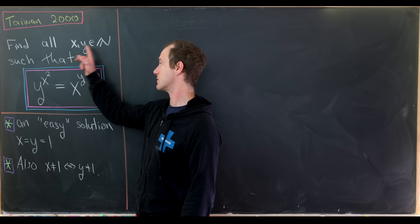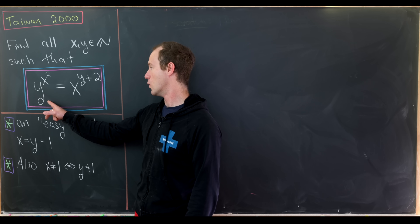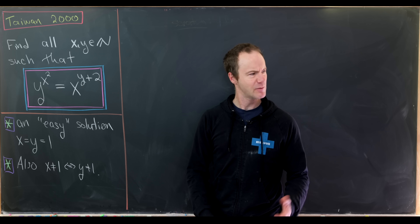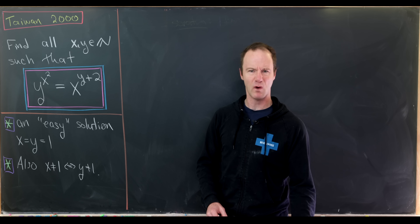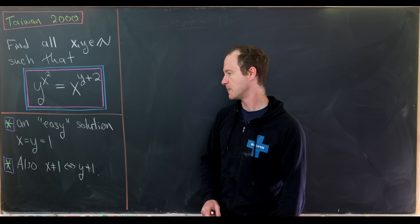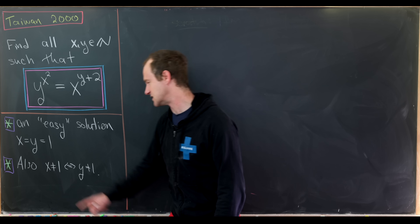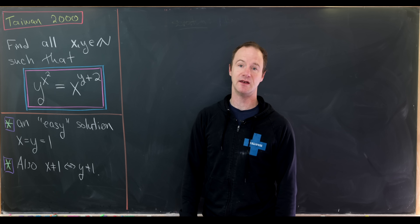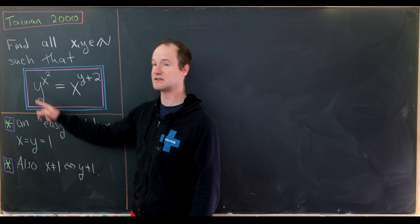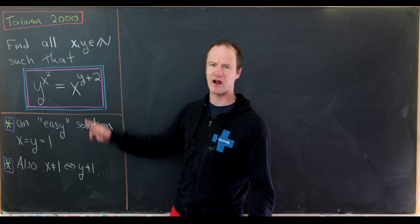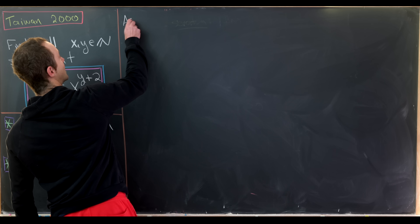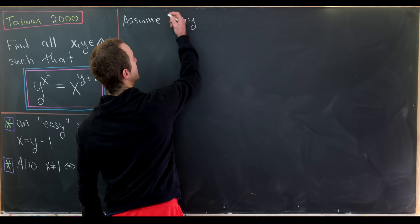We want to find all natural numbers x and y such that y to the power of x squared equals x to the power of y plus 2. An easy solution we can just guess is x equals y equals 1. Also notice that if x is not equal to 1, that's equivalent to y not being equal to 1, because if y is not equal to 1 the left-hand side is not equal to 1, making x equal to 1 impossible, and vice versa.